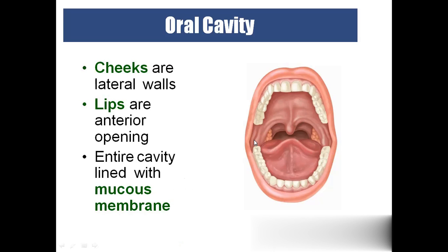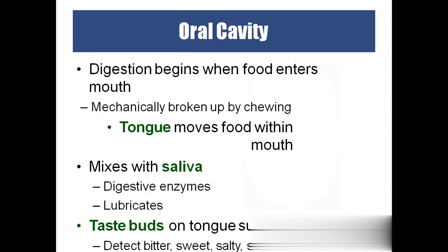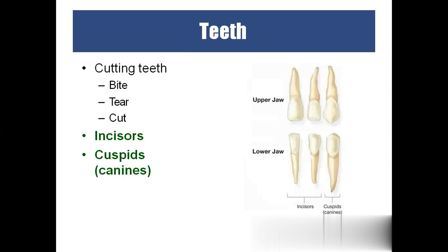The cheeks are called buccal. The entire interior of the oral cavity is lined by mucous membrane. The oral cavity digests food mechanically by chewing; the tongue helps in movement of the food. In the mouth, food mixes with saliva to form bolus. Taste buds on the tongue can detect bitter, sweet, salty, and sour flavors. There are four types of teeth: incisors, canines, premolars, and molars.